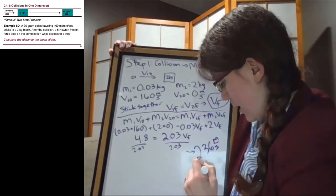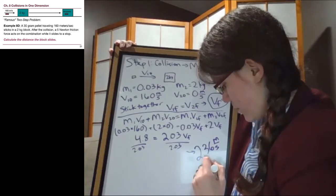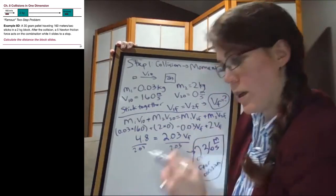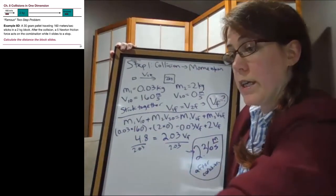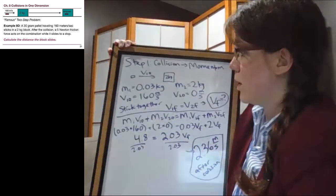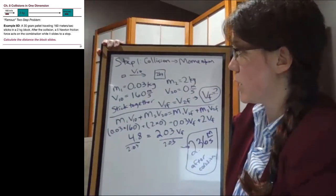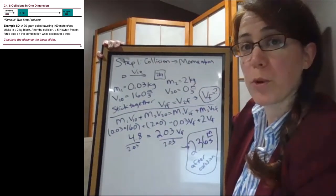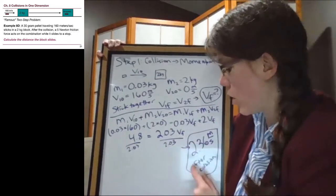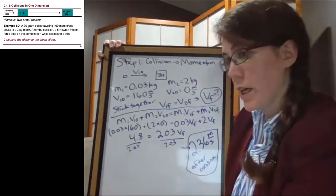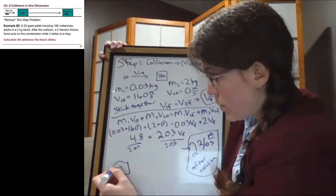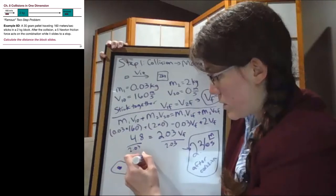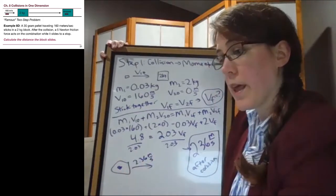Now if you need to pause the video to make sure that you've got all of this written down, totally understandable, because I'm going to have to erase some of it to have enough space. The one point that I want to make is right now what the situation looks like is we now have the pellet sticking into the block and it's moving at 2.36 meters per second. That becomes our before situation in step two.